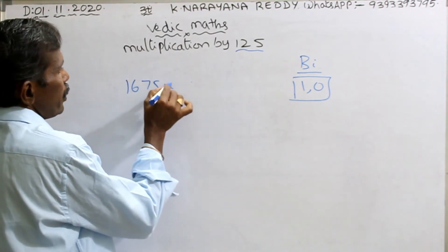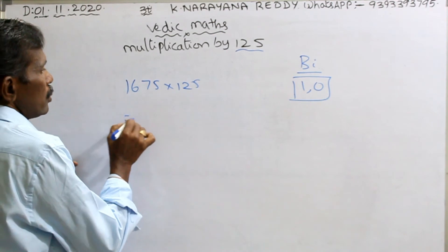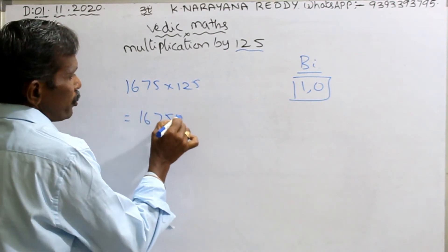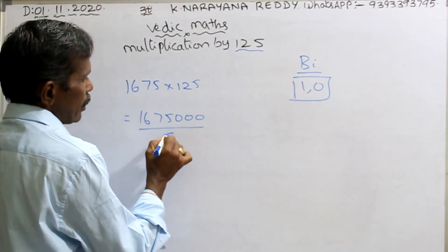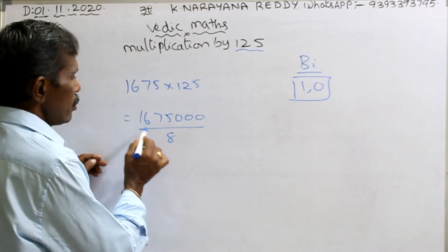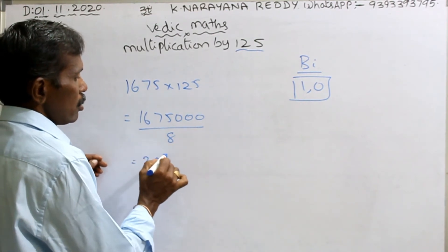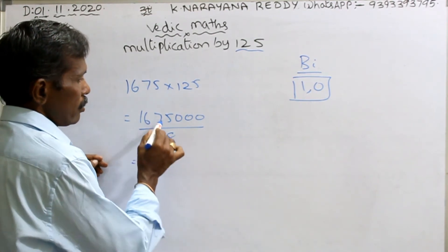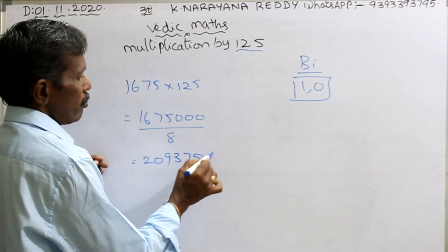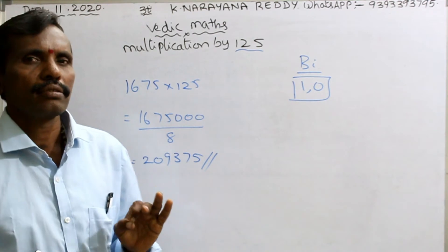1675 into 125. Same — 1,675,000 by 8. Divide step by step: 8 goes into 16 — 2, remainder 0; carry through the digits. The answer is 209,375. Simple.